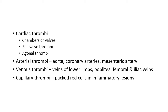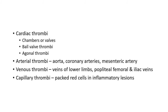Thrombi can also occur in the microcirculation — that is capillaries — called capillary thrombi. Cardiac thrombi can occur in any of the chambers of the heart, that is the atrium and ventricles, or on the valve cusps. The more common sites are the atrial appendages, especially in the right atrium. Mostly cardiac thrombi are mural and non-occlusive — mural means attached to the walls. Cardiac thrombi are also common on mitral and aortic valves. Sometimes a large round thrombus may form and obstruct the mitral valve, and this is called a ball valve thrombus.